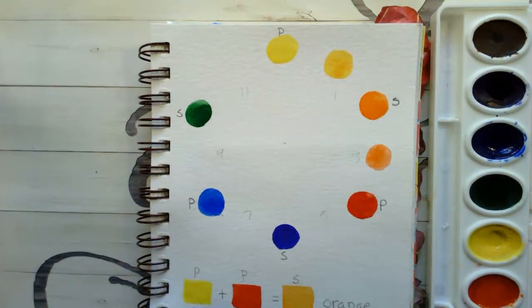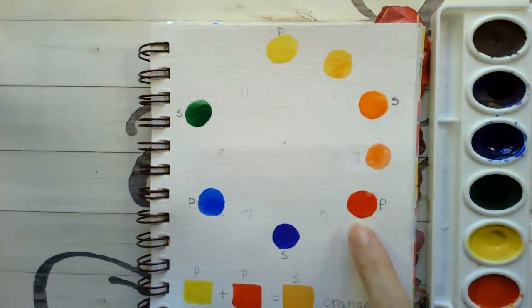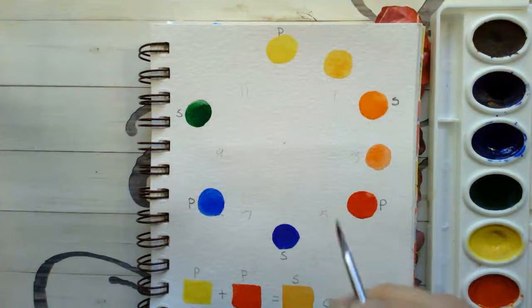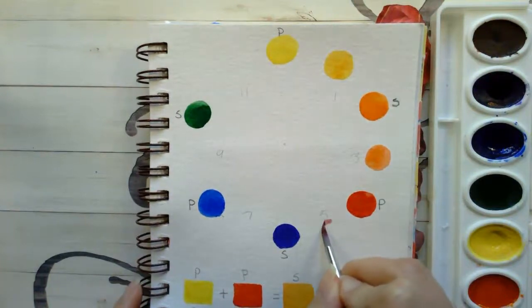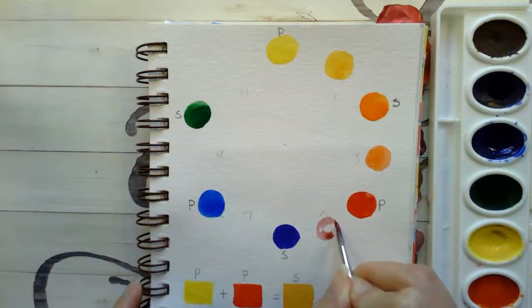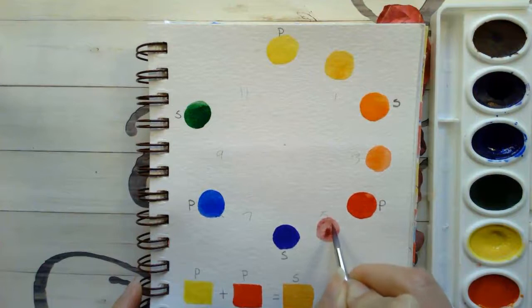Rinsing my brush. Our next color that we would have would be red violet. It's located between red and violet. Therefore, our next color is red violet. So that's going to be located at the five. And of course, as I've been saying, adjust your colors as needed.